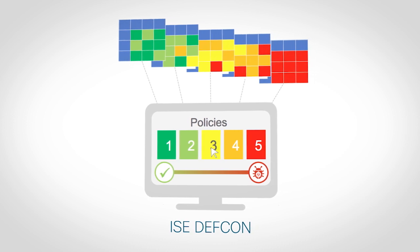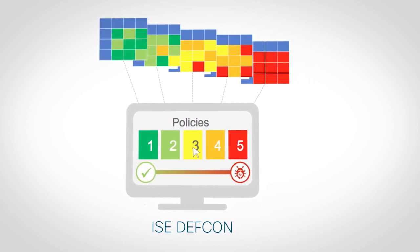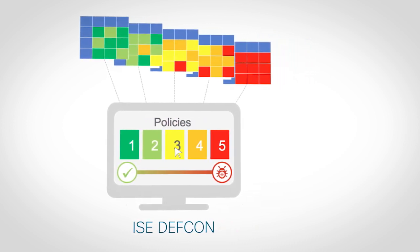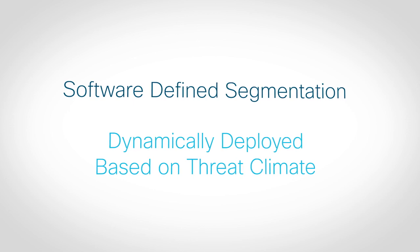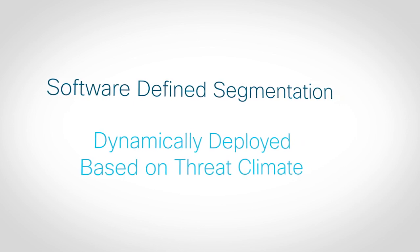Finally, we continue to focus on the ever-changing threat landscape by providing simplified and agile threat responsiveness for your network that lets you quickly raise the drawbridges and effectively wall off your crown jewels from threats. We call this ISE DEFCON, where you can set up multiple policy scenarios predefined with multiple TrustSec matrices for software-defined segmentation that can be dynamically deployed immediately based on an organization's threat climate.